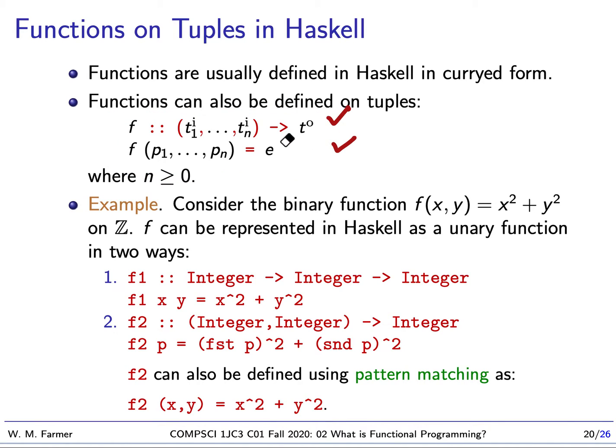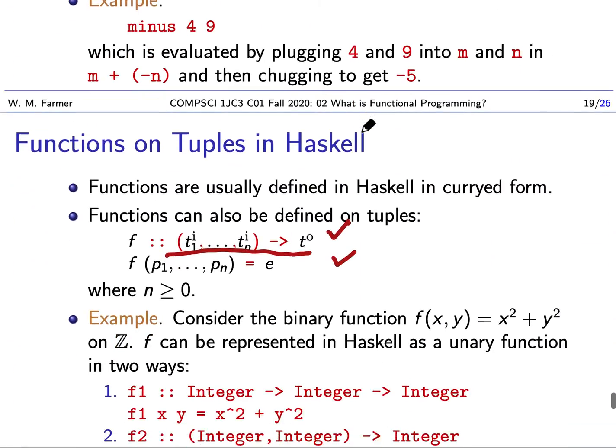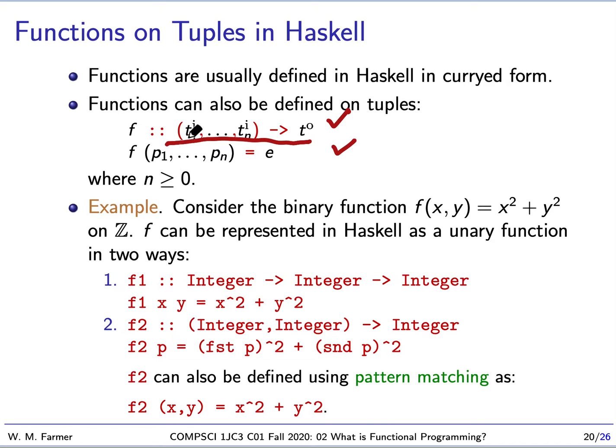If we look at the type, it looks similar to the curried form, but they're not the same. The difference is here - this type takes a single input and returns an output, but that single input is a tuple, which is a sequence of values. So f is applied to a single input which is a tuple containing a sequence of n values. Even though technically it's a unary function, it's a way of representing an n-ary function.